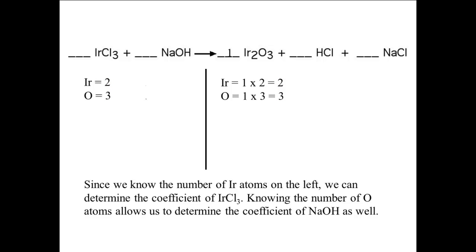Since we know the number of iridium atoms on the left, we can determine the coefficient of iridium chloride. Iridium appears only once in the reactants, in IRCl3. So to get two iridium in the reactants, the coefficient of IRCl3 needs to be 2. Similarly, oxygen appears only once in the reactants, in NaOH. Since we need three oxygen atoms in the reactants, and NaOH has only one, we need a 3 as the coefficient of NaOH.